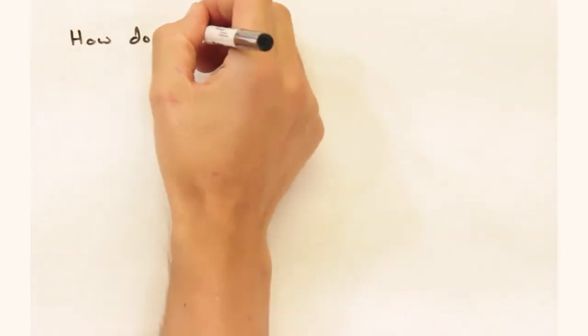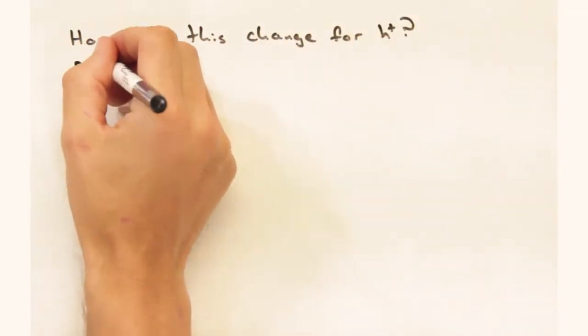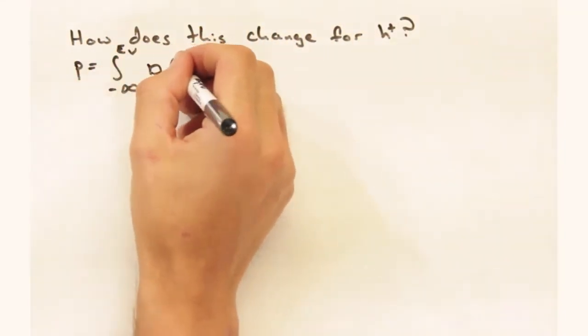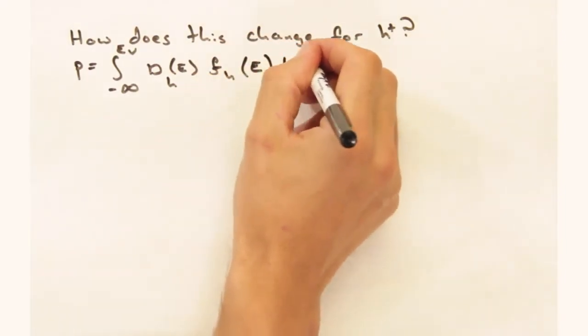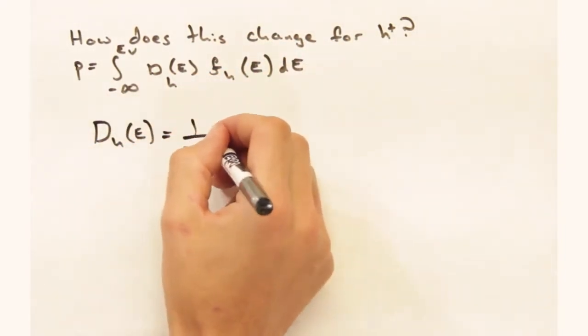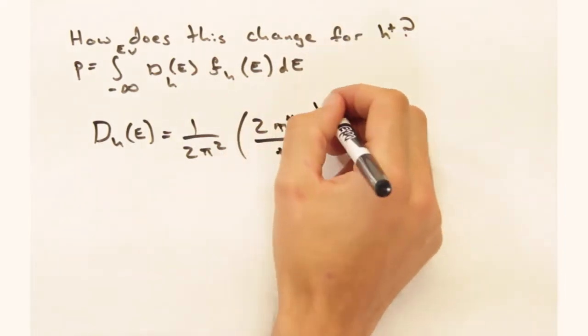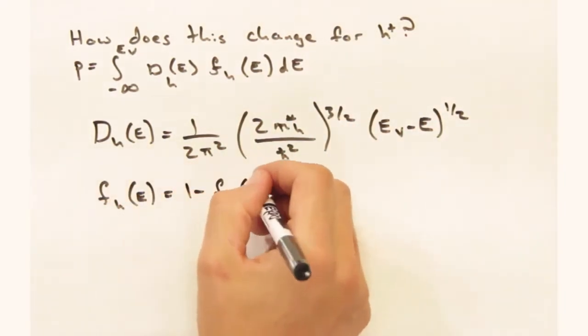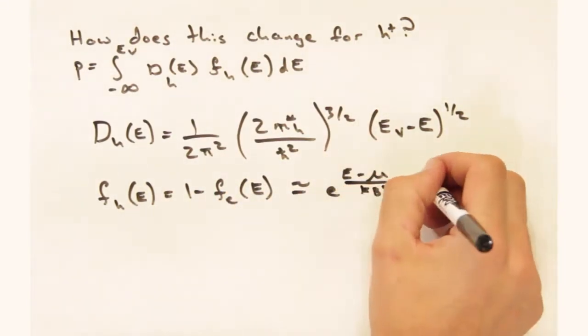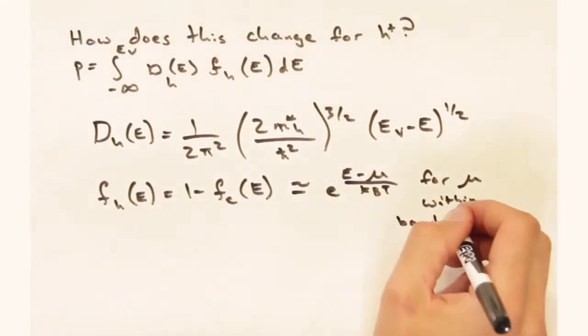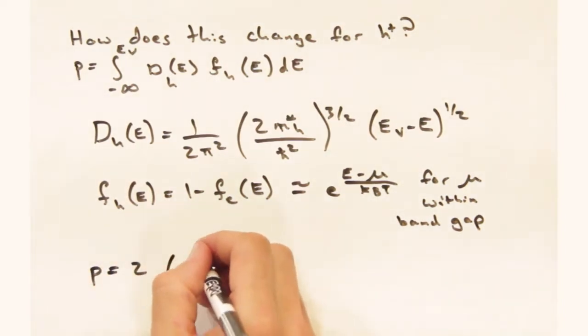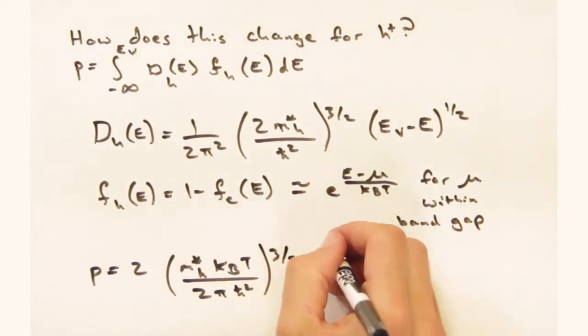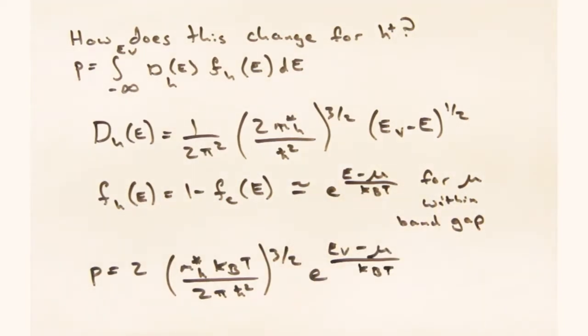Now how do you think this is going to change for holes? Hmm. Well, we'll start with the same integral form. The energy offset in the density of states will just be the energy of the valence band edge, minus E, and the band mass correction will be for holes. And what about the Fermi Dirac distribution? Wouldn't it just be the same? Nope. When we talk about holes, what are we counting? The empty states. So this Fermi Dirac distribution would be one minus the Fermi Dirac for electrons. There you go. Now we plug all of this in, and we get an expression for p.